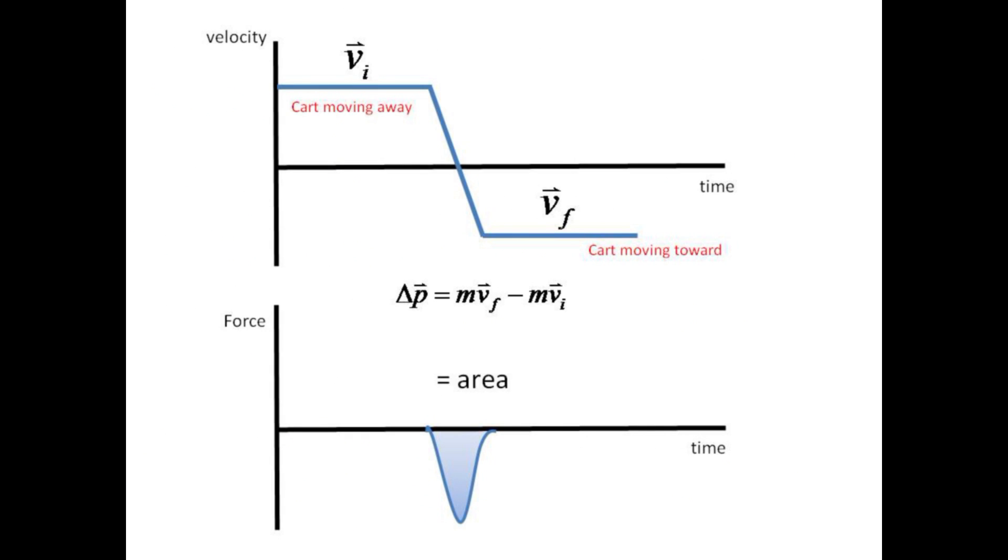A plot of velocity versus time will show the object change from a positive initial velocity to a negative final velocity. From the velocities, we can compute the change of momentum due to the collision. The impulse is the area under the force versus time curve, here shown as a negative area.